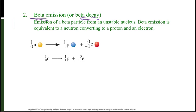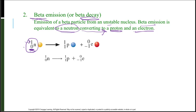Next, we have beta emission or beta decay, which is the emission of a beta particle from an unstable nucleus. Beta emission is equivalent to a neutron converting to a proton and an electron. Notice that a neutron has zero protons and it has a mass of one. On the right, if I have one proton and one electron, one minus one gives me zero. And a proton has a mass of one. An electron does not have a mass, so one plus zero is one.